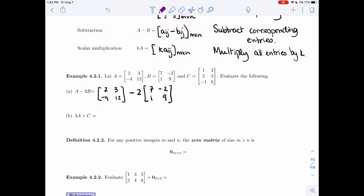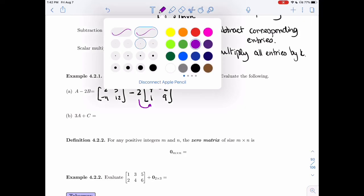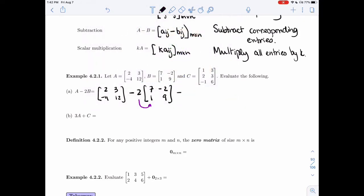All right, first thing I'm going to do, I'm going to multiply B by 2 because the priority of operation is the same for matrices that it was for vectors and for real numbers, multiplication comes first. So 2, 3, minus 4, 12.